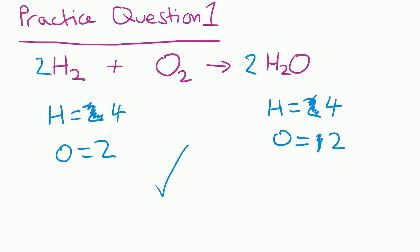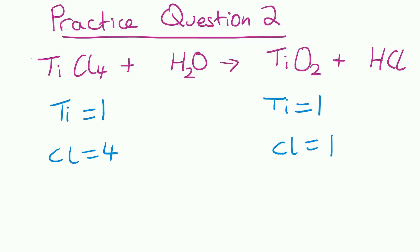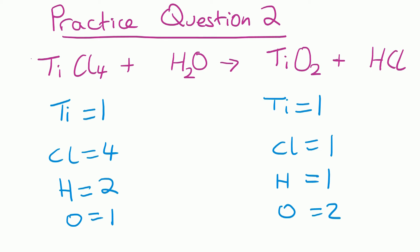Practice question two — pause the video, have a go and then check back in. We've got one Ti on each side, four Cls on the left and one on the right, two Hs on the left and one on the right, and one O on the left and two on the right. Let's start by getting the Cls correct: we've got four on the left, so we multiply HCl by four to get four Cls on the right. That also means we've got four Hs on the right, so we put a big two in front of H2O to give us four Hs on the left. That now gives us two Os on the left, which looks balanced.